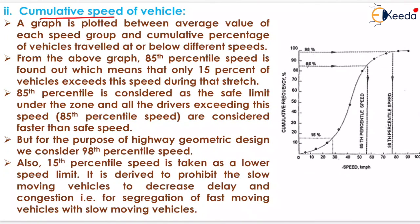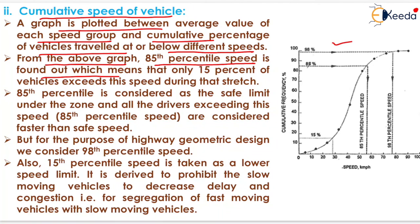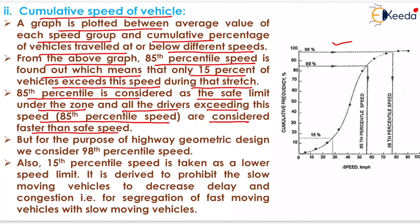The next one is the cumulative speed of vehicle, which is shown here. A graph is plotted between average value of each speed group and cumulative percentage of vehicle traveled at or below different speeds. From the graph, 85th percentile speed is found out, which means that only 15 percent of vehicles exceed this speed during that stretch. 85th percentile is considered as the safe limit under the zone, and all the drivers exceeding this speed are considered faster than the safe speed. But for the purpose of highway geometric design, we consider 98th percentile speed.